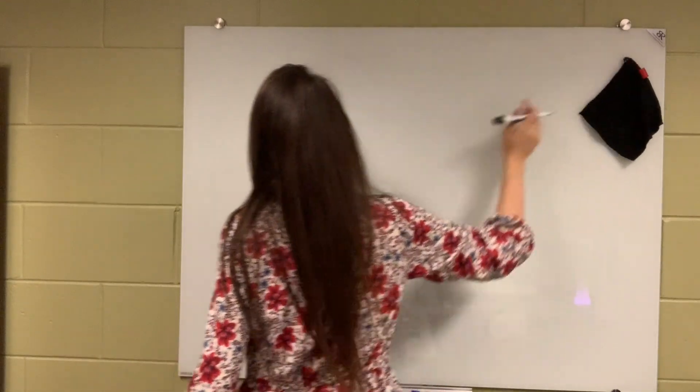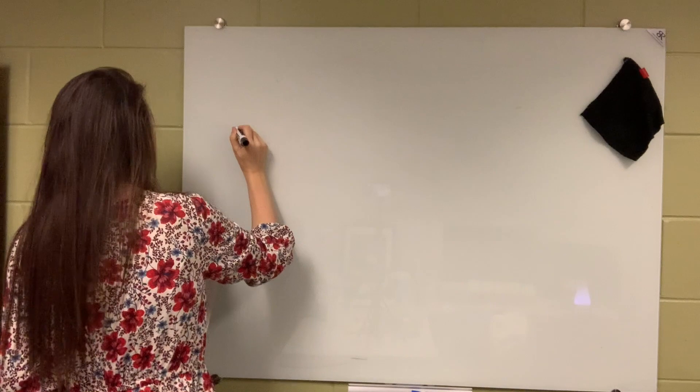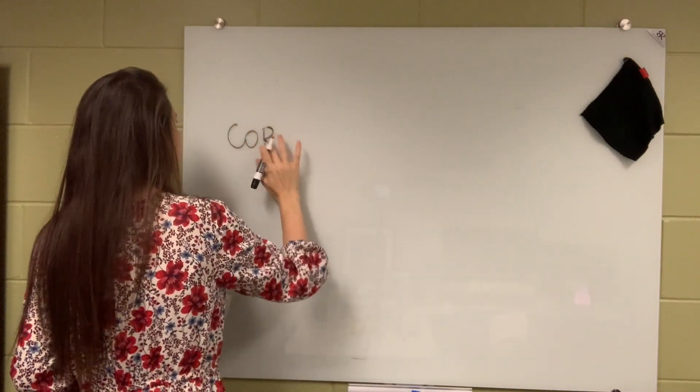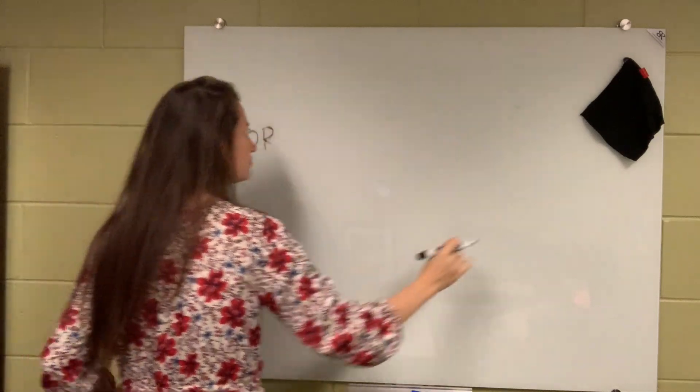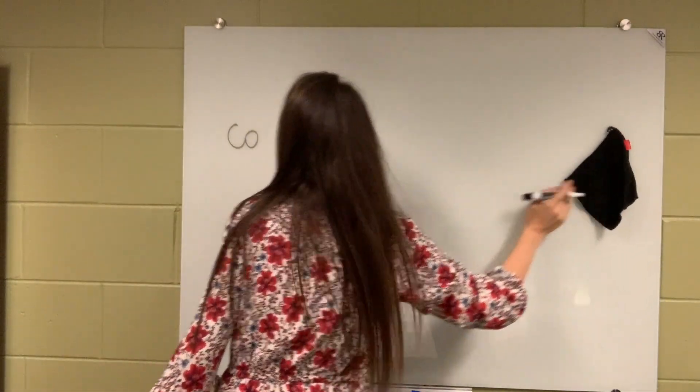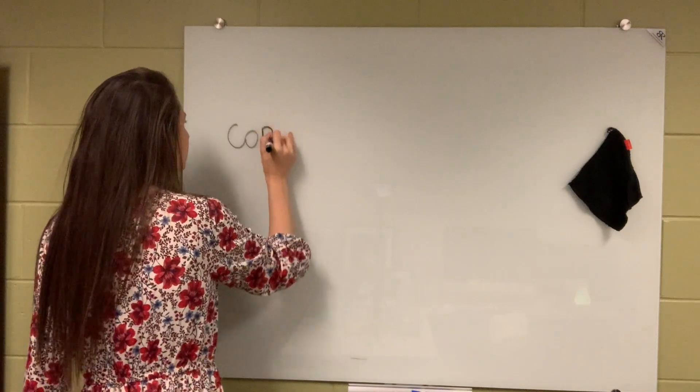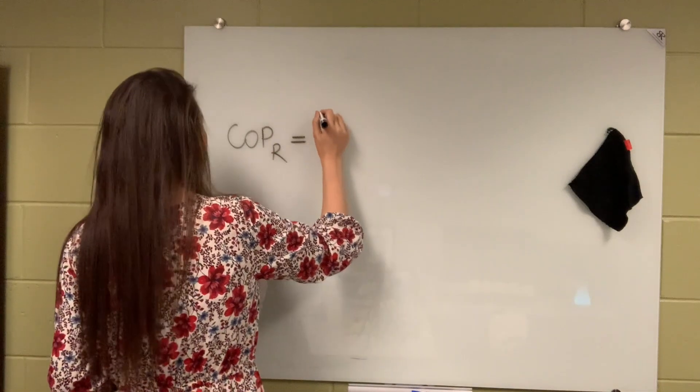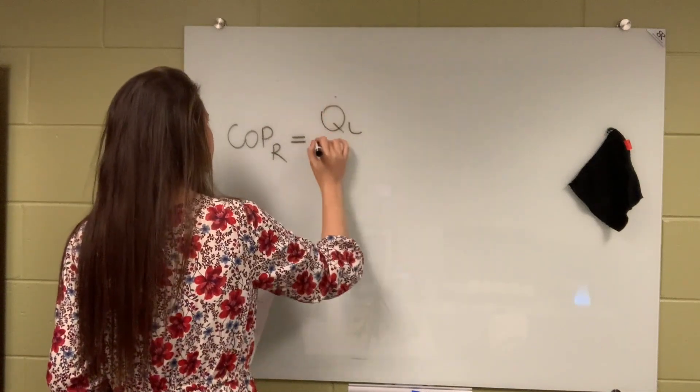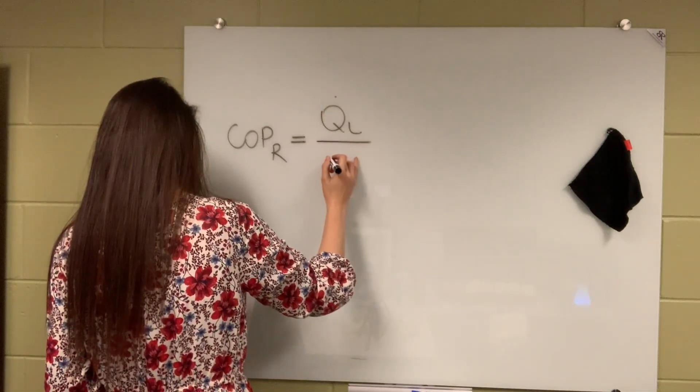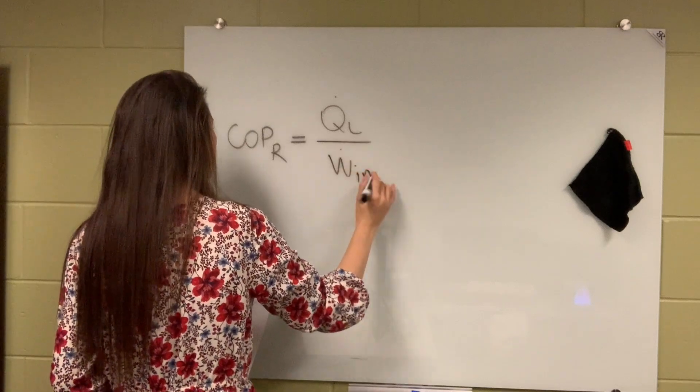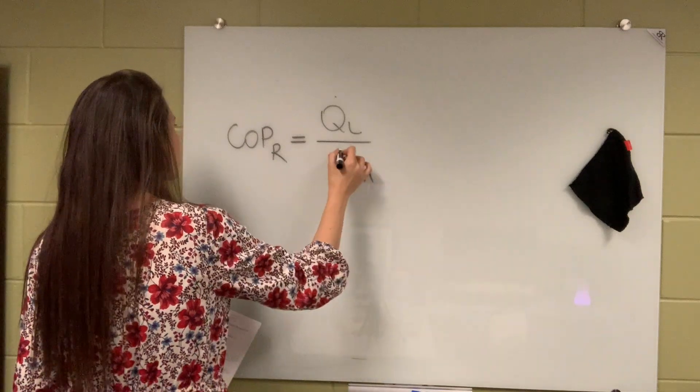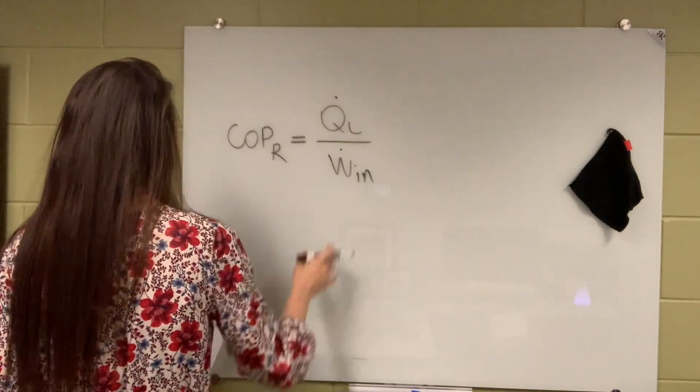Alright. So COP of a refrigerator is equal to QL over Win or power that is put in. So when I put this dot, it means the rate, right? Power.